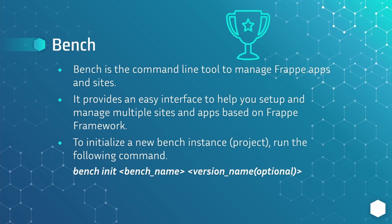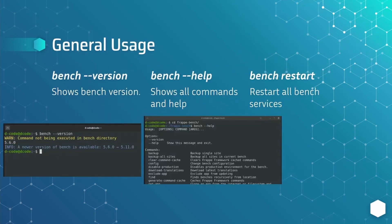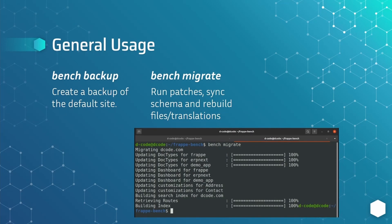There are multiple versions of the frappe framework available on GitHub, so we can also specify the version along with the bench init command. Let's see the commonly used bench commands. bench version shows which bench version is installed. bench help shows all the commands present in frappe bench. bench restart is commonly used in production setup to restart the bench. In some situations we need to backup our site — we can run bench backup. We can also migrate the database and run patches using bench migrate.